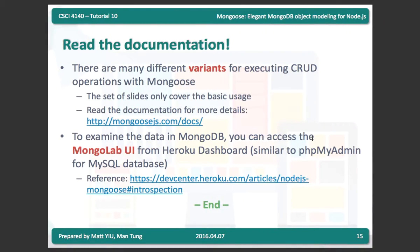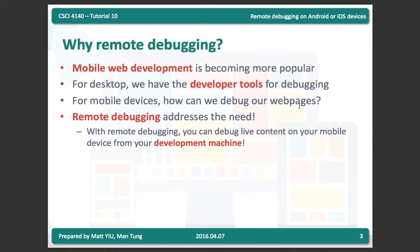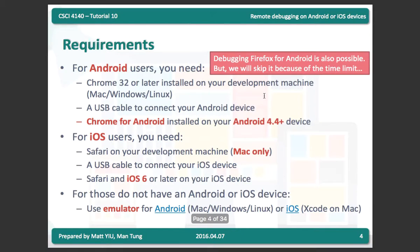The next topic is remote debugging on Android or iOS devices. Your assignment tool or project may involve web development on mobile devices. For desktop, debugging is easy with developer tools, but on mobile devices you cannot access the developer tools on your phone, so you need remote debugging. The setup is straightforward — the most complicated part is configuring the device.